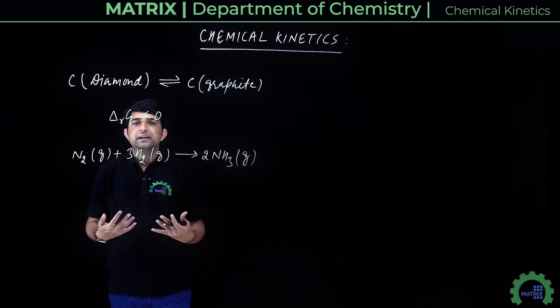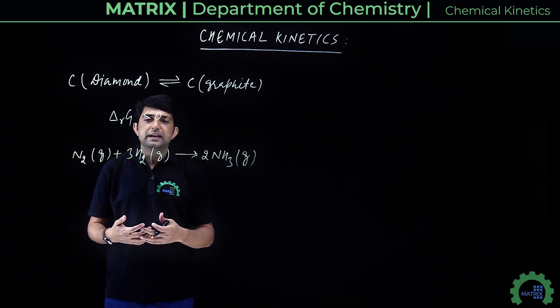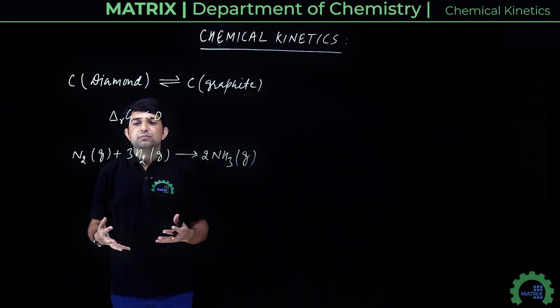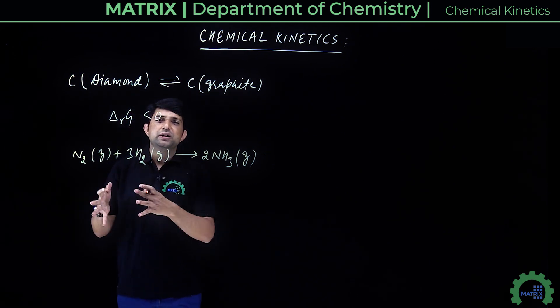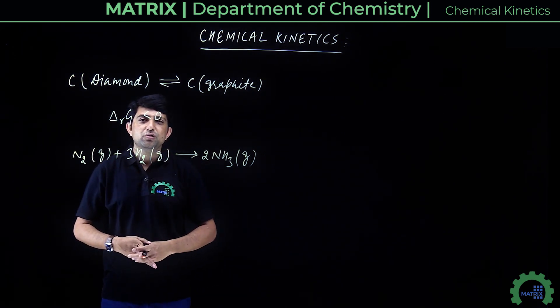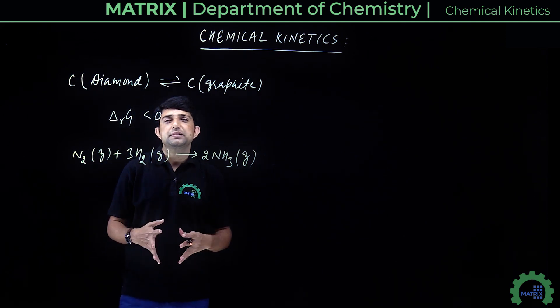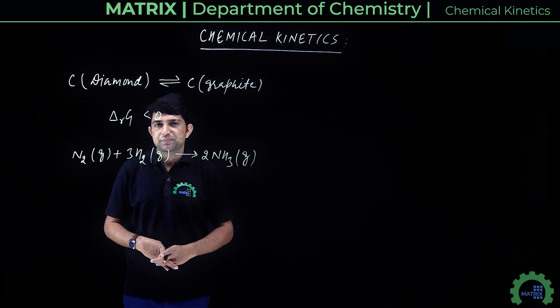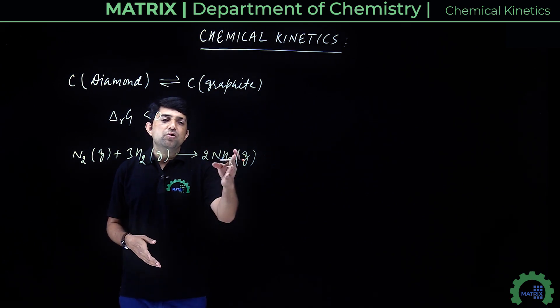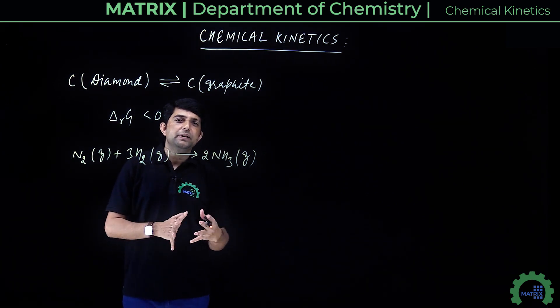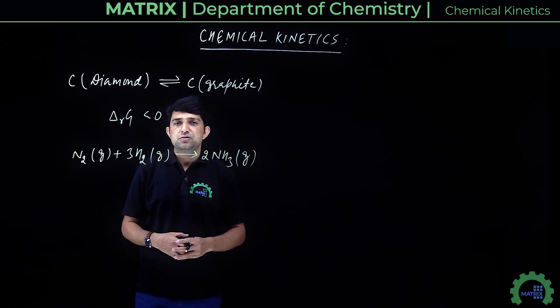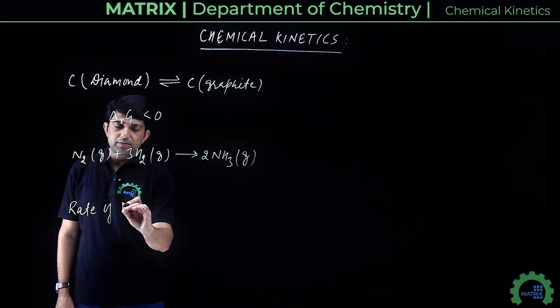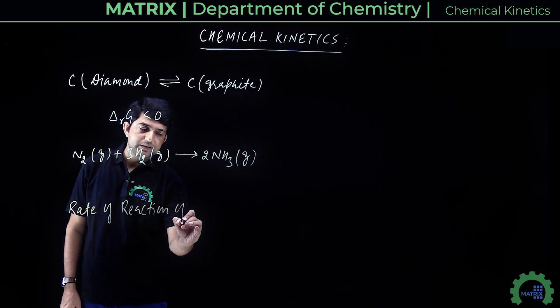For example, if we have a reaction N₂ plus H₂ gives NH₃, we will discuss the rate of this reaction. Let's say initially in 10 minutes, this much amount of N₂ and H₂ reacted and this much amount of ammonia was formed. If you're asked how much time it takes to form 5 moles of ammonia, 1 mole, or 2 moles, how do we find this?